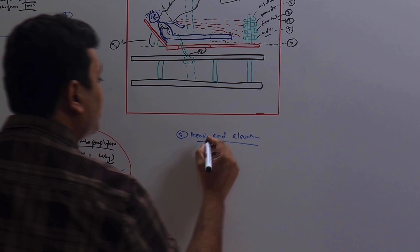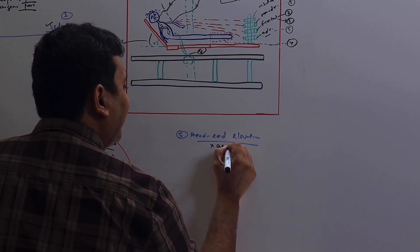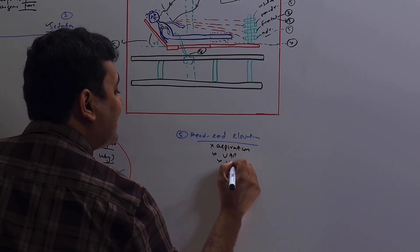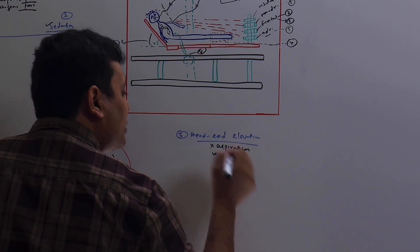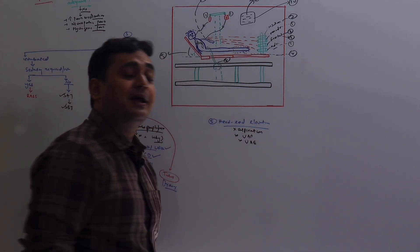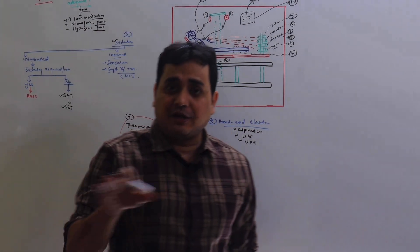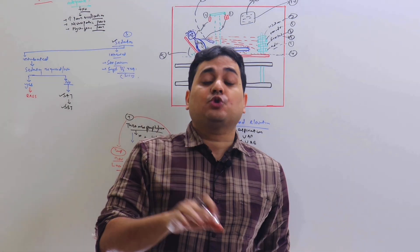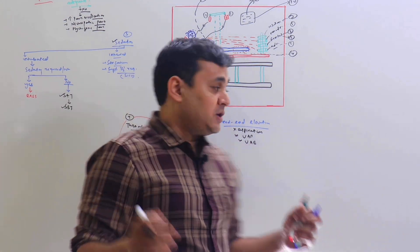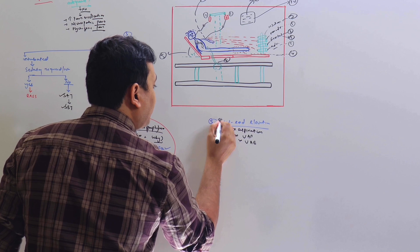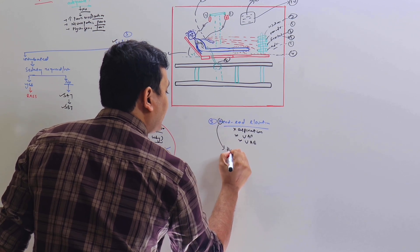Number five is head end elevation. All patients in the ICU must have head end elevation. This is done to ensure no aspiration, no VAP, or no ventilator-associated events. Still, in some patients you will find the patient is lying flat in the ICU, and they are the patients who are hemodynamically unstable.